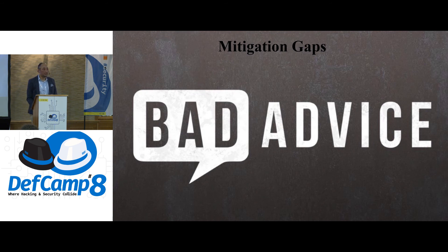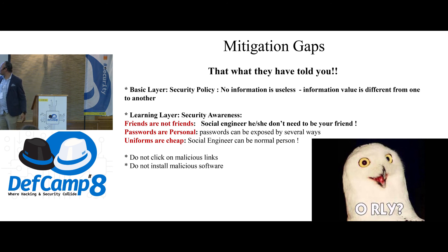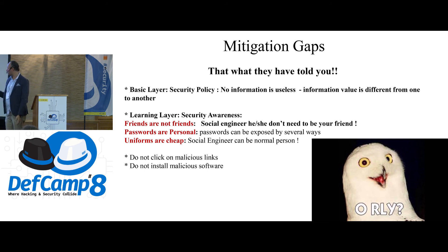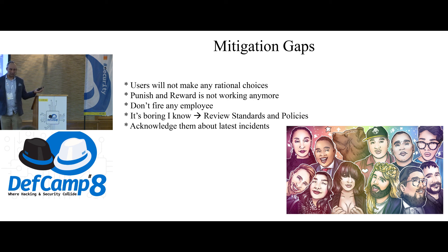On mitigations: companies are always talking about security awareness and giving training to employees. But what they typically tell users — 'you have business security layers,' 'don't click malicious things,' 'don't install malicious software' — is very generic. You're not implementing real awareness by just giving that sentence. Users will not always make rational choices. Don't depend on that assumption — it's not happening. It's not true.